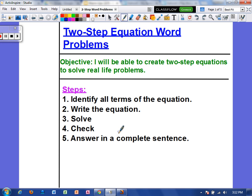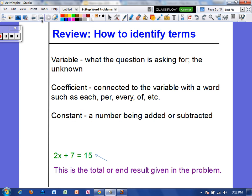So let's review. The variable is what the question is asking for and it's what we don't know. The coefficient is the number multiplied by the variable, so in the word problem they will be connected with a word such as each, per, every, of, etc. The constant is the value that is added or subtracted. Now the number on the other side of the equal sign, that is the total or the end result that they give you in the problem.